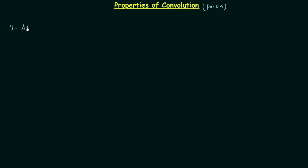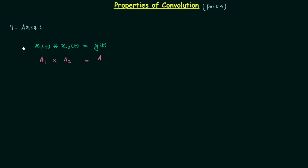Property number 9 is the property of area. According to this property, if there are two signals x1(t) and x2(t) and they are convoluted and the resulting signal is y(t), then the area of x1(t) is A1, the area of x2(t) is A2, and the area of the final signal A equals the multiplication of A1 and A2. To understand this, we will take one example.